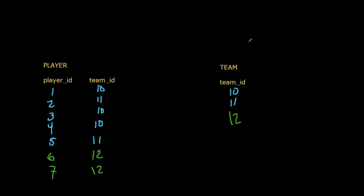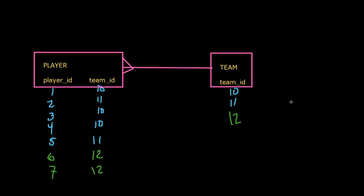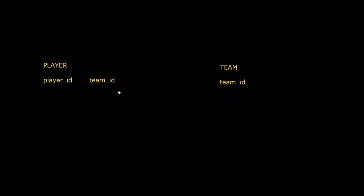Now let's consider an alternate design where we try to place the foreign key at the one side of the relationship. Remember, the team table here is the one side of the relationship, with the player side being the many side. Let's see what happens if we try to keep track of the relationships between teams and players by putting a foreign key in the team table. We'll discover pretty quickly that it's a giant disaster.